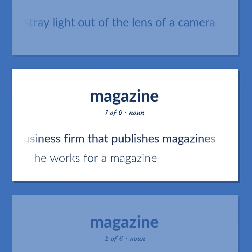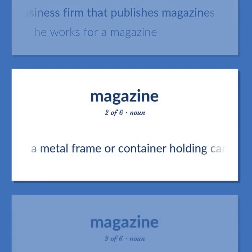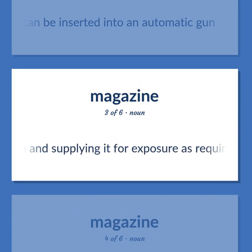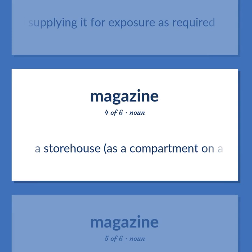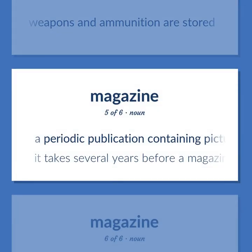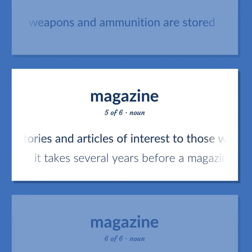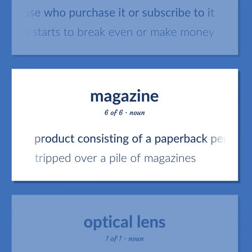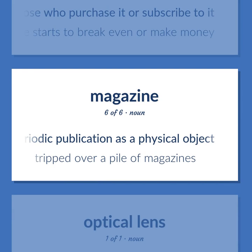A business firm that publishes magazines — he works for a magazine. A metal frame or container holding cartridges, can be inserted into an automatic gun. A light-tight supply chamber holding the film and supplying it for exposure as required. A storehouse, as a compartment on a warship where weapons and ammunition are stored. A periodic publication containing pictures and stories and articles of interest to those who purchase it or subscribe to it. It takes several years before a magazine starts to break even or make money. Product consisting of a paperback periodic publication as a physical object — tripped over a pile of magazines.